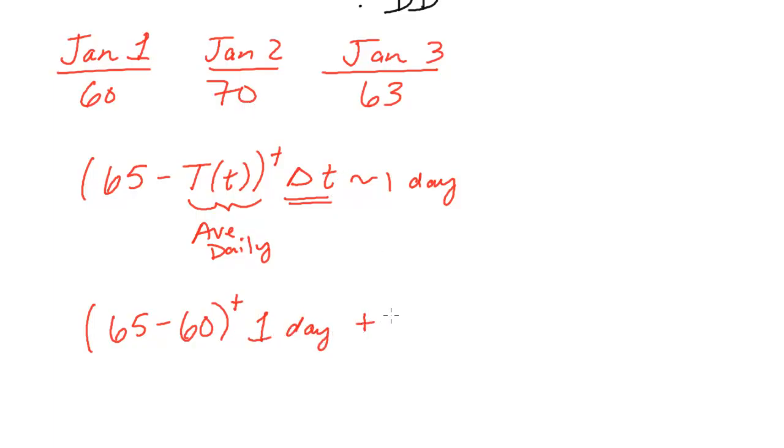Plus, we'll do this for the first three days. 65 minus 70, one day. Hope you see the pattern here. And 65 minus 63, positive times one. And just, I don't write out of room, but there's a day unit on there.